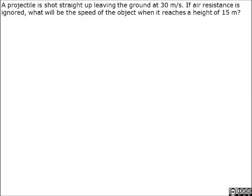A projectile is shot straight up leaving the ground at 30 meters per second. If air resistance is ignored, what will be the speed of the object when it reaches a height of 15 meters?